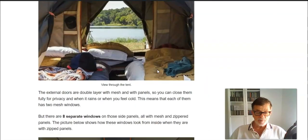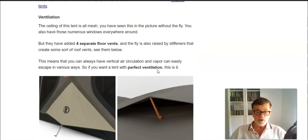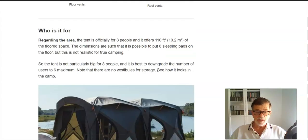Now regarding the space, the area - the tent is officially for eight people. And for this you have around 10 square meters or 110 square feet. So basically you can put eight sleeping pads on the floor. This is how they typically determine the capacity of such tents, especially on the US market.